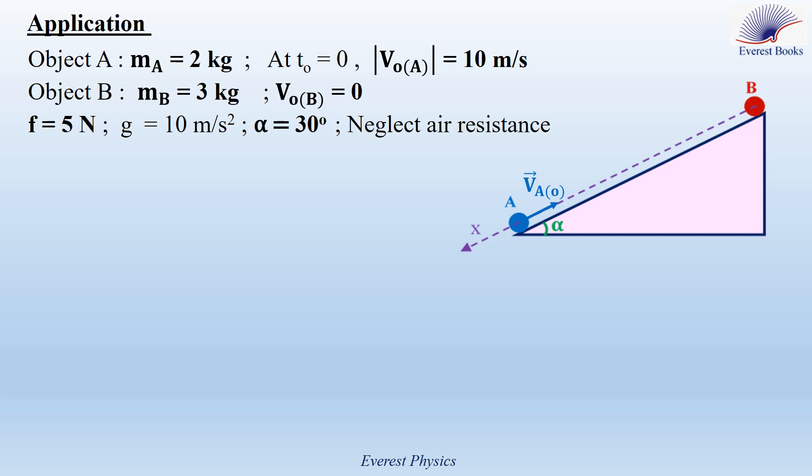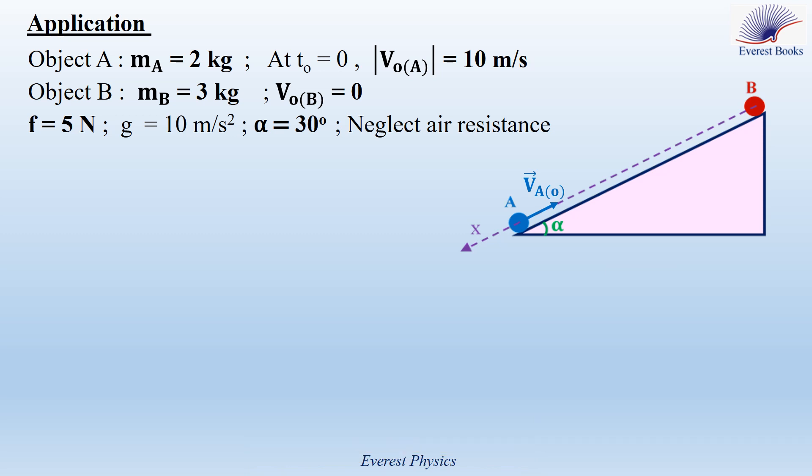Let's move to application 1. Consider the figure. An object A of mass MA equals 2 kg is launched at t₀ equals 0 with an initial velocity of magnitude 10 m/s from the bottom of an inclined plane making an angle of 30 degrees with the horizontal. Another object B of mass MB is released from rest from the top of the inclined plane at t₀ equals 0. The magnitude of the friction force exerted by the incline on each object is 5 N.